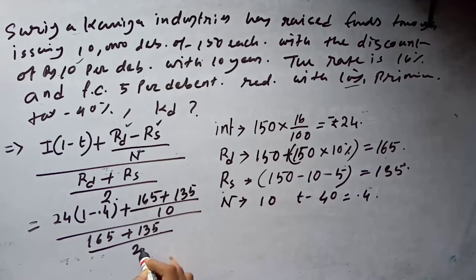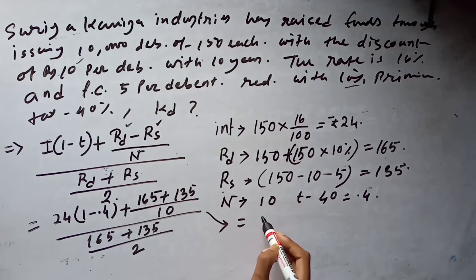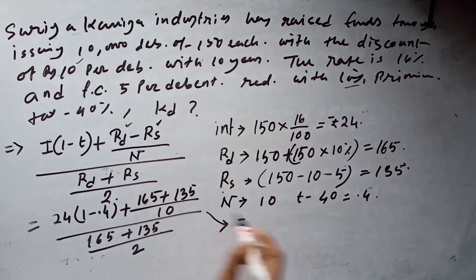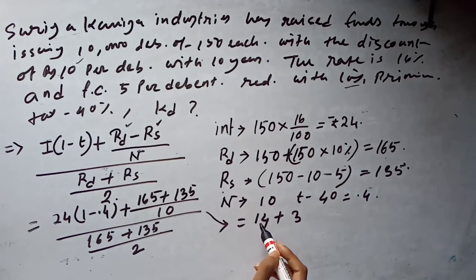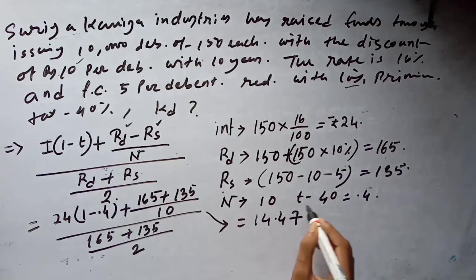Plus the redeemable price of the share, 165, minus the issuing price 135, with the limitation for maturity of 10 years, divided by the average investment: 165 plus 135 divided by 2. If we calculate this, we get 14.4 plus 3.